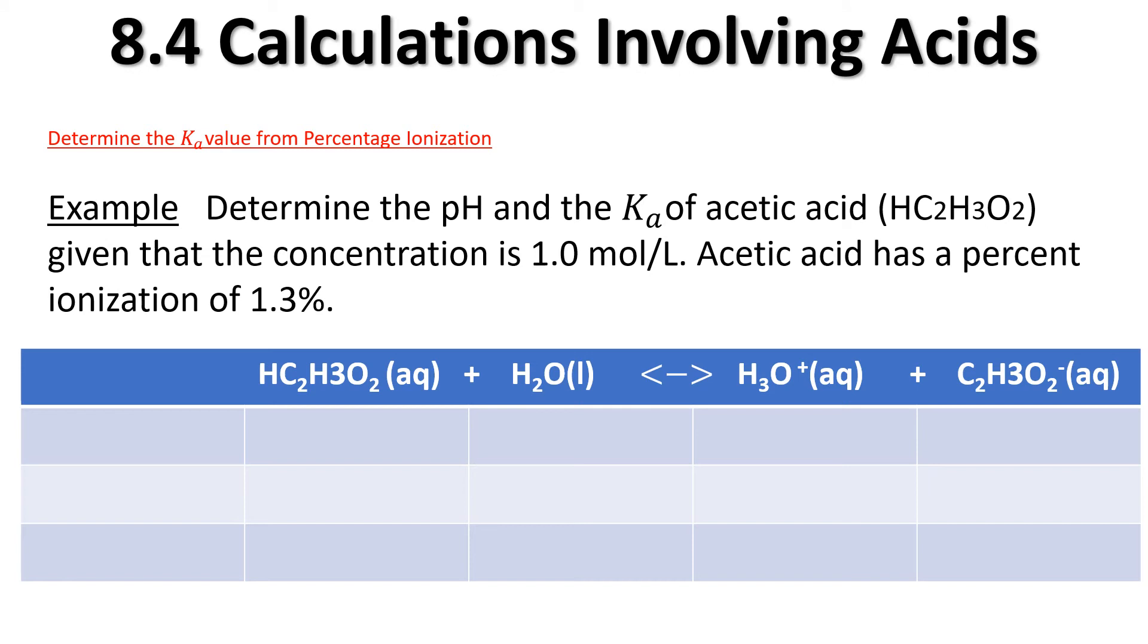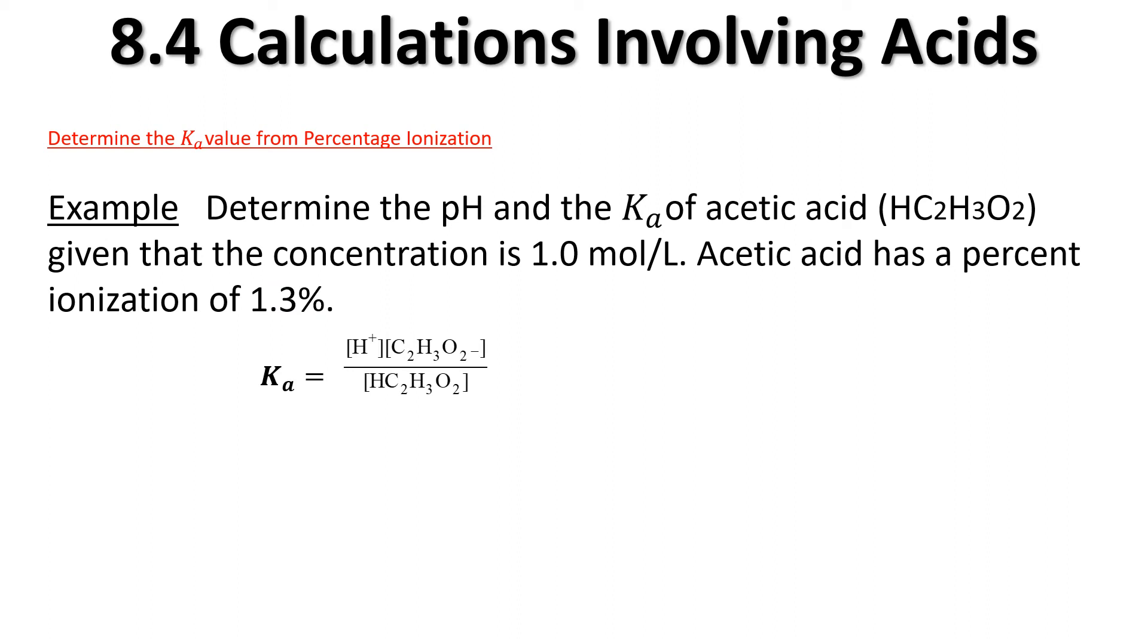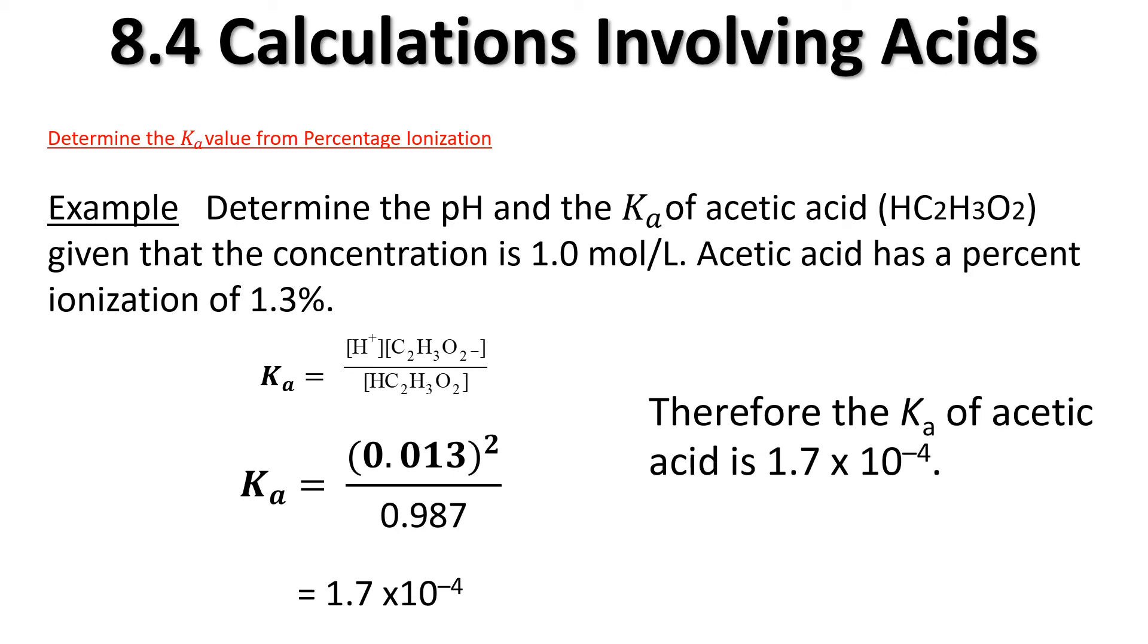If we want to get the Ka, we're going to need to use an ICE chart to do this because there is some change. For our initial concentrations, we've got a molarity of 1.0, and we have nothing for the other ones. This is going to shift to the right, and we know that that's going to be the drop, and the other two are going up by x and x. We're just going to need to do some mathematics to figure out our concentrations. We subtract it to get our change. Now that we know all the values, we can do our Ka calculation. You can check that my math is correct, 1.7 times 10 to the minus 5. And so that would be our Ka of the acetic acid.